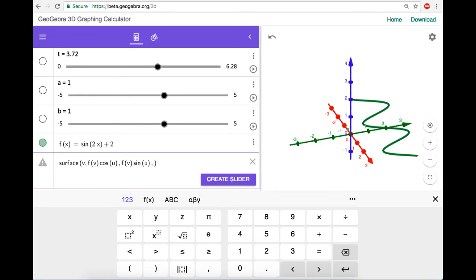And now I need to tell it the two parameters that I'm using. So the first one's gonna be v, and I'm gonna let that go from a to b. And then the second one is gonna be u, and that's going to go from zero to whatever the current value of t is. And I'll press enter.